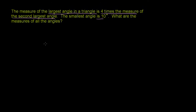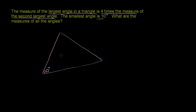We know one of them — it's 10 degrees. Let's draw an arbitrary triangle. We know the smallest angle is 10 degrees, so let's say this right over here is the smallest angle. Now let's call the second largest angle x. And since the largest angle is four times the second largest, the largest angle is going to be 4x.